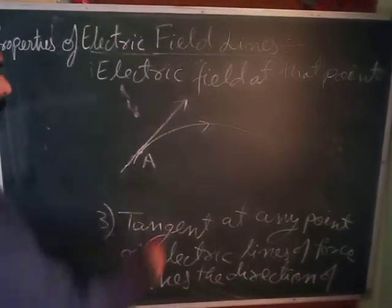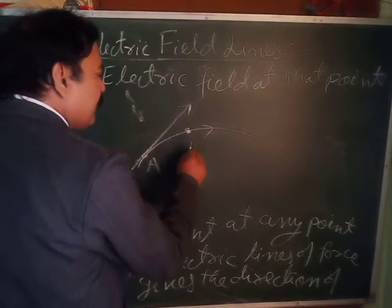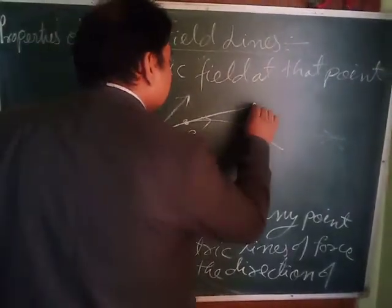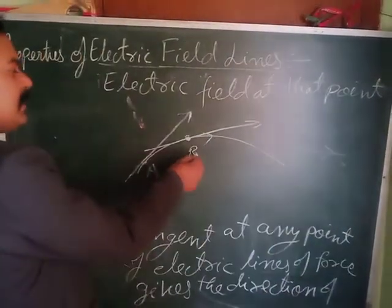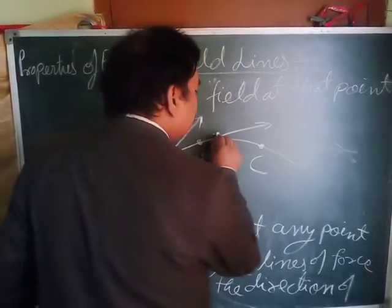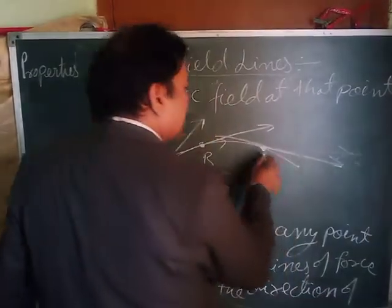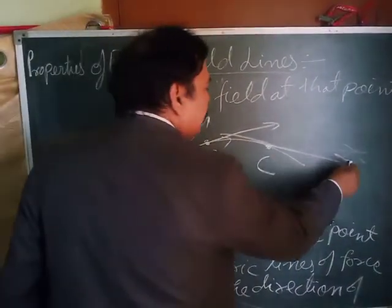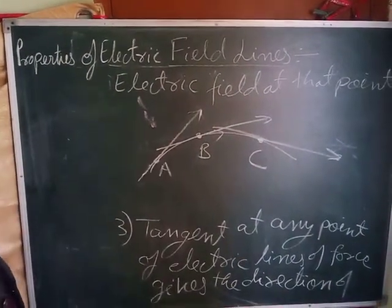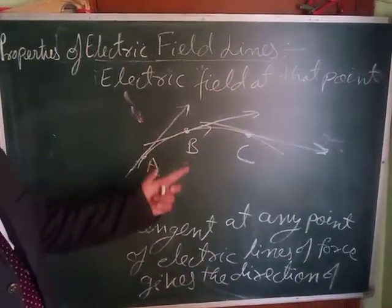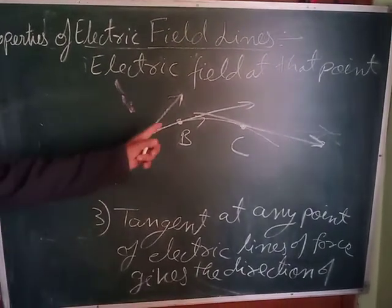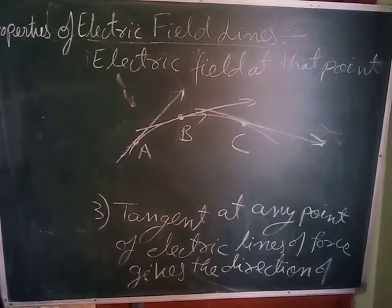Suppose you want to find the direction of the electric field at point B — again draw a tangent through point B, and that gives you the direction of the electric field at B. Similarly, for point C, draw a tangent through point C and the electric field will be directed along that tangent. In this way you can find the direction of electric field intensity at any point on an electric field line by drawing the tangent at that point.